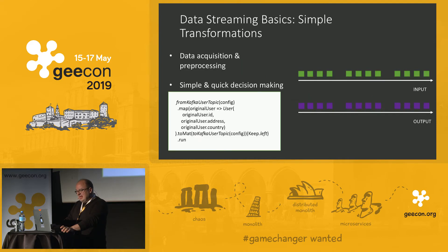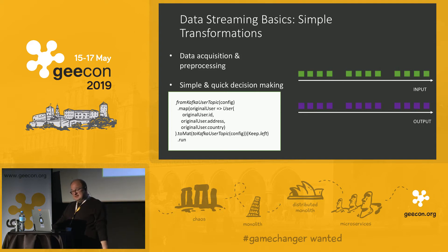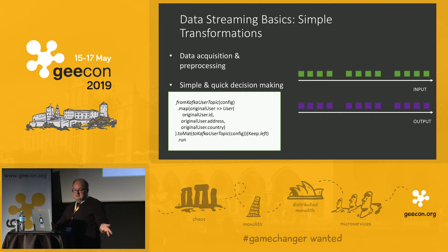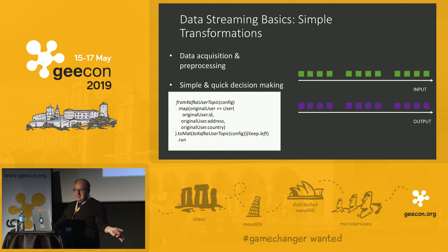Now let's look at the processing types and primitives you'll use in streaming frameworks. The simplest example: you have a time series of data and you do maps, filters, flat maps — basic collection operations. With that you can cover simple things like data acquisition, reading from file systems and writing to a streaming hub, or data anonymization — for instance, taking user data from a Kafka topic, leaving out the sensitive fields, and writing it to another topic.